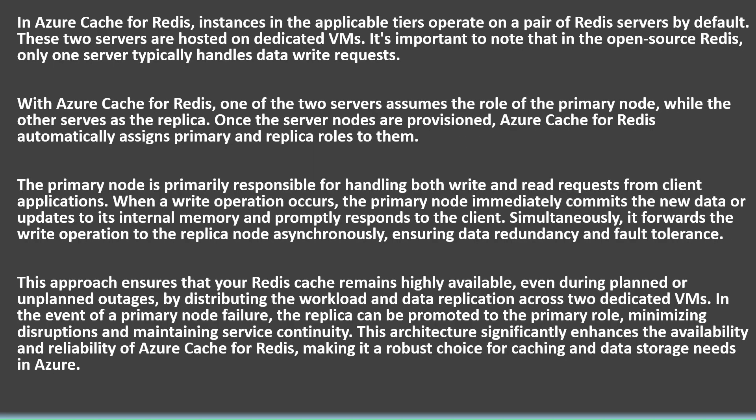In Azure Cache for Redis, instances in the applicable tiers operate on a pair of Redis servers by default, and these two servers are hosted on dedicated VMs. In open source Redis, only one server typically handles data write requests. With Azure Cache for Redis, one of the two servers assumes the role of the primary node while the other serves as the replica.